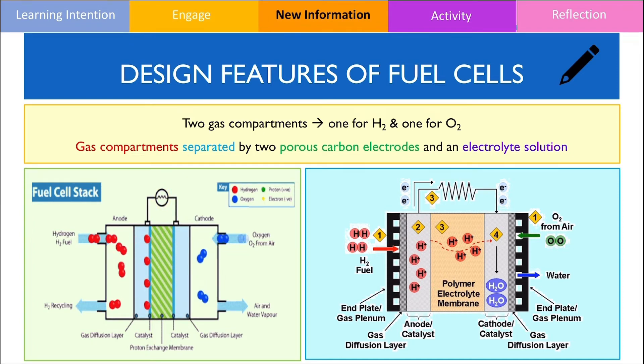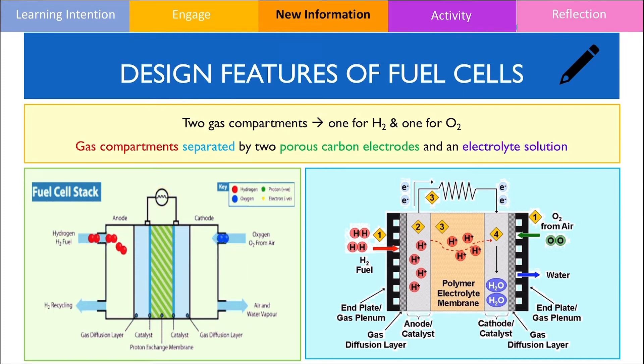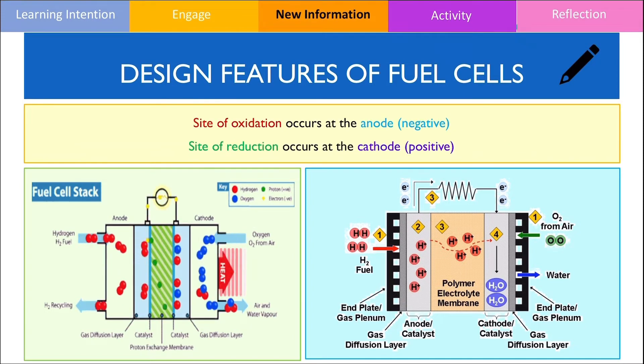If you take a closer look at the both diagrams, you can also see that both of the electrodes are also coated with a catalyst to improve the efficiency of the reaction. Like a galvanic cell, the site of reduction occurs at the cathode, which is a positively charged electrode and the site of oxidation occurs at the anode, which is a negatively charged electrode.